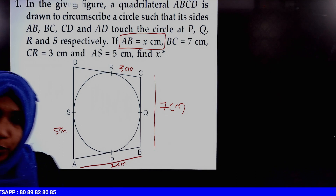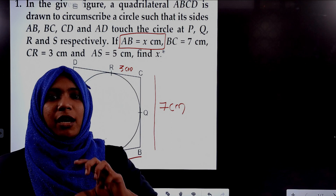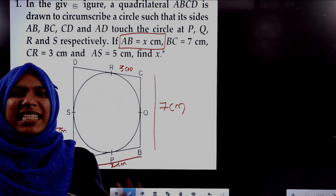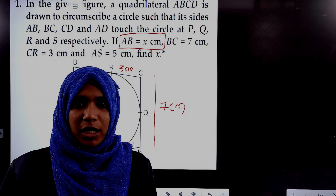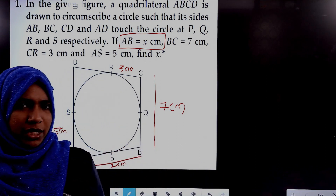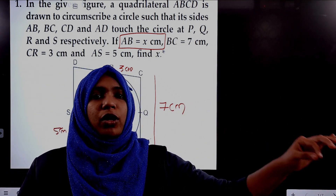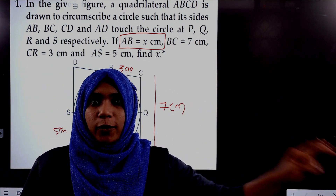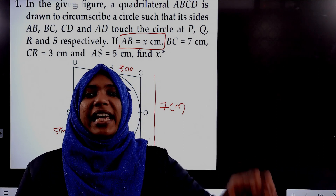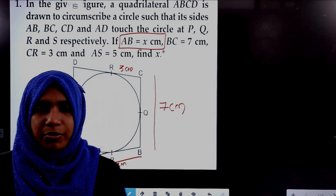The important theorem is Theorem 10.2 of your textbook. The theorem states: the tangents drawn from the same external point to the same circle are equal in length. So from the same external point, these two tangents are equal in length. That's the concept.